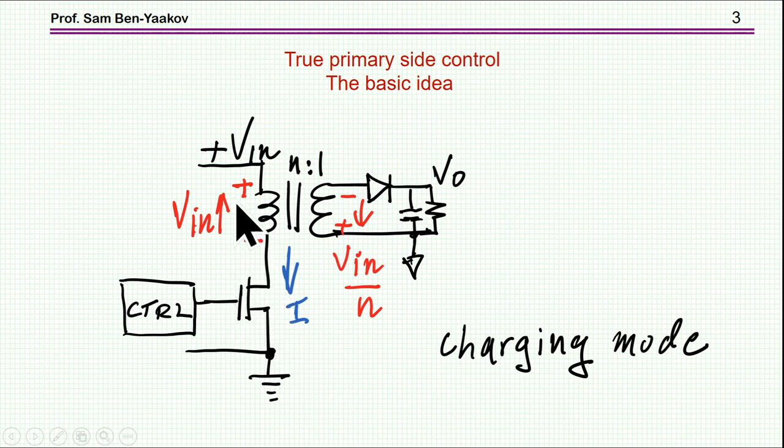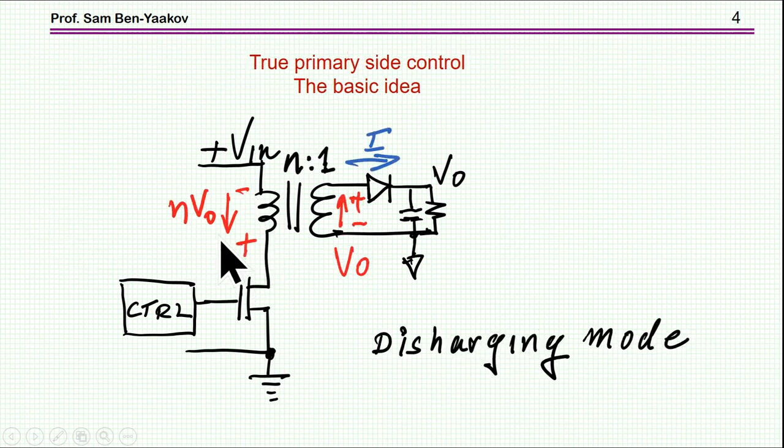At this stage, the transistor is on, current is flowing this way, and the voltage across the primary is V in. However,